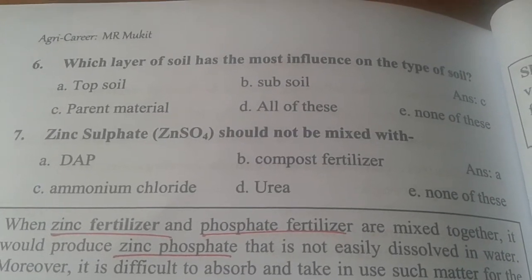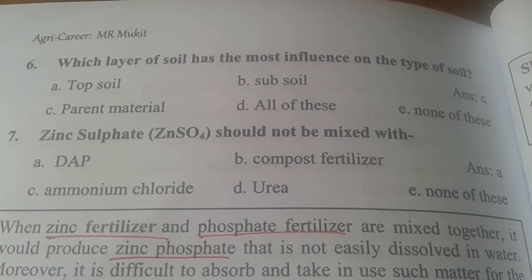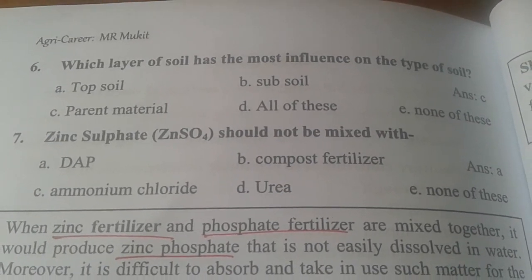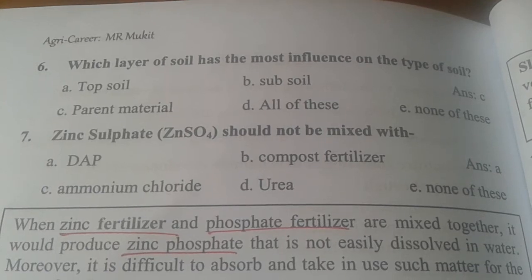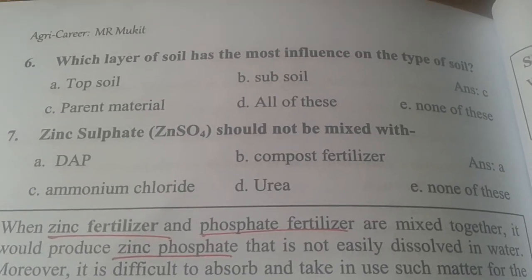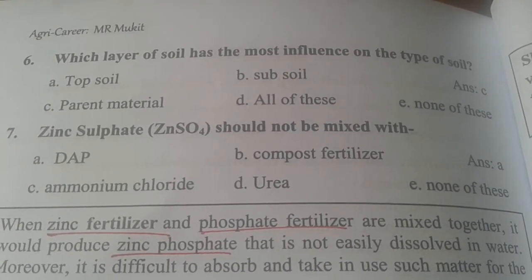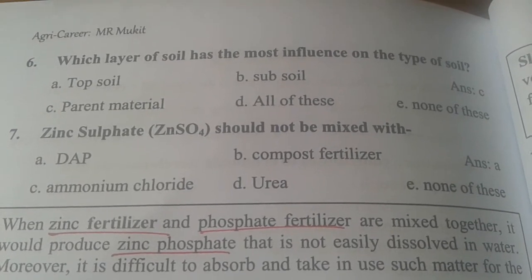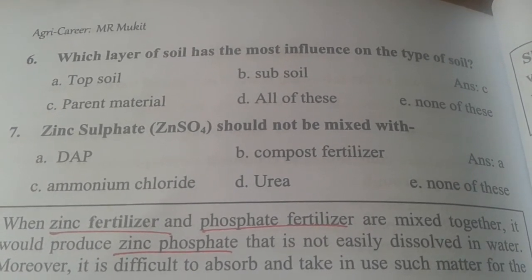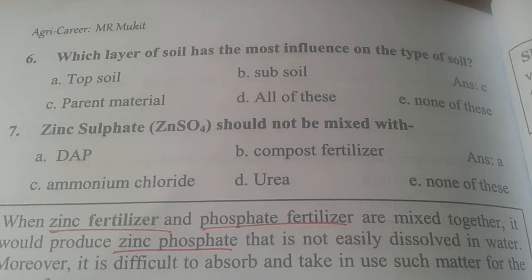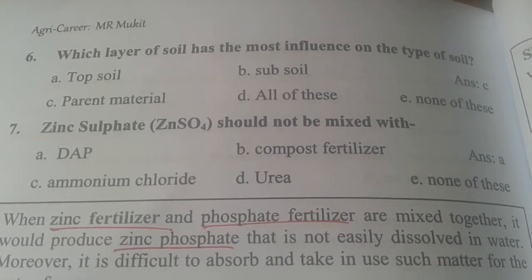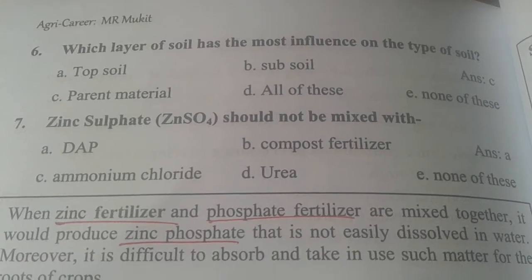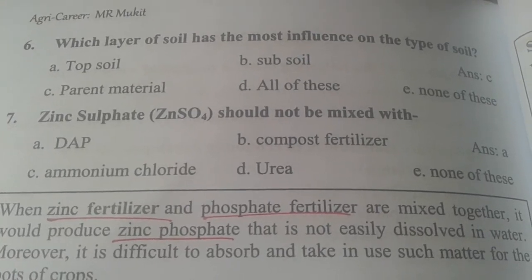Which layer of soil has the most influence on the type of soil? The answer is parent material. Parent material, top soil — parent material.